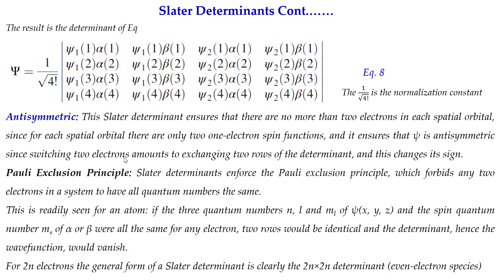The Pauli exclusion principle is also enforced: the Slater determinant forbids any two electrons in a system from having all four quantum numbers the same. If all quantum numbers n, l, m_l, and spin m_s are the same for two electrons, then two rows in the determinant become identical. If two rows are identical, the determinant value is zero — the wavefunction vanishes. In this way, Slater very cleverly incorporated antisymmetry and spin into the wavefunction.